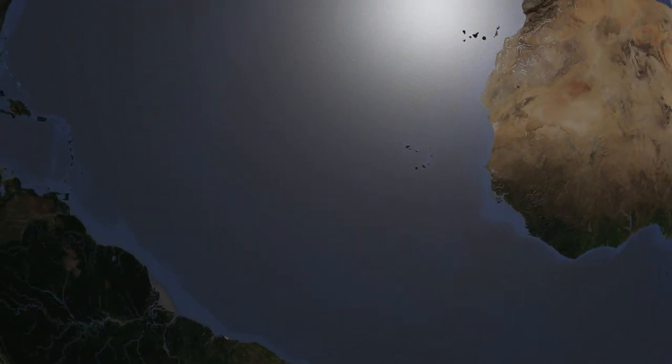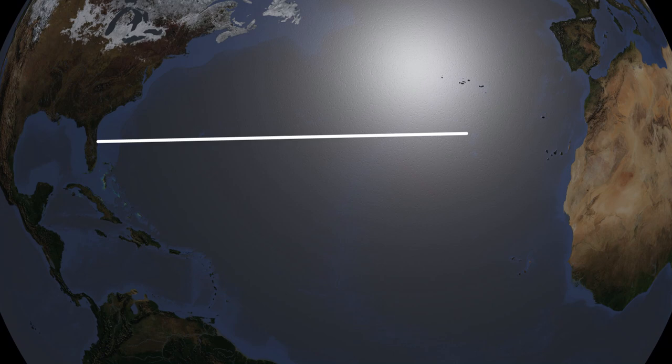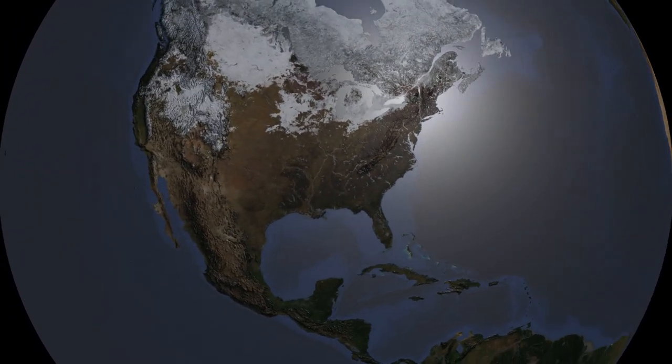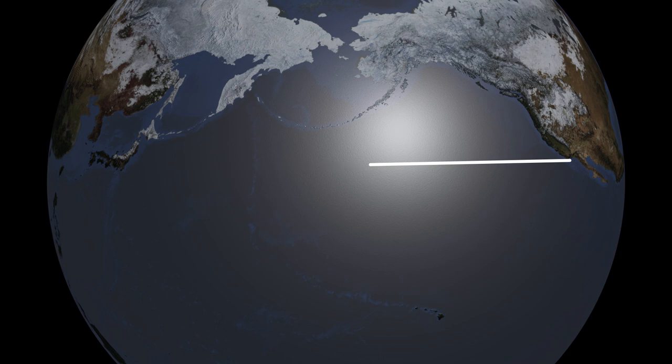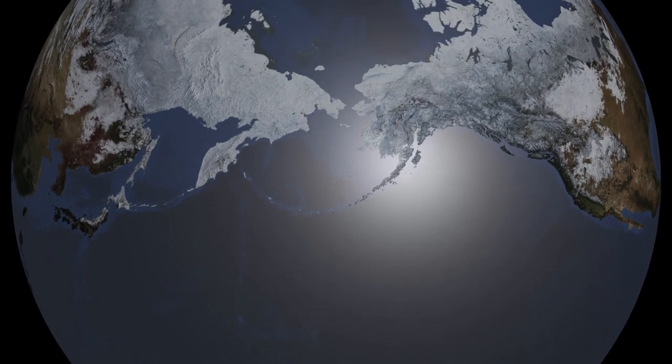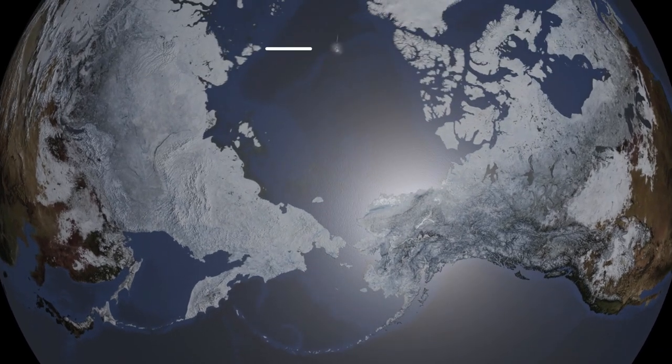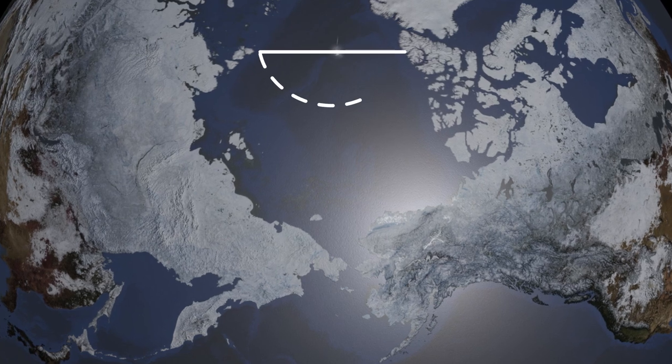As you move further north though, the shortest route starts to bend towards the north pole. At this scale it may not be immediately obvious, but if we take it to its extreme and we approach the pole, clearly it's shorter to go over the pole itself rather than following around the parallel of latitude.